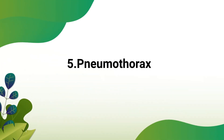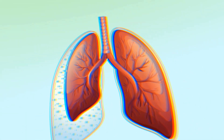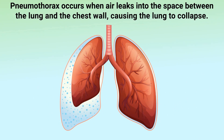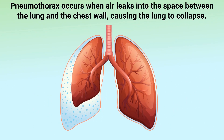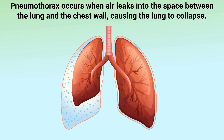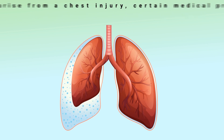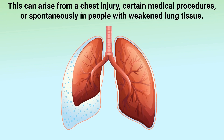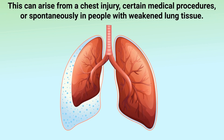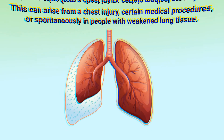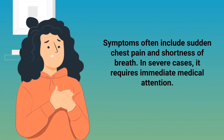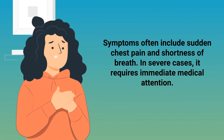Pneumothorax occurs when air leaks into the space between the lung and the chest wall, causing the lung to collapse. This can arise from a chest injury, certain medical procedures, or spontaneously in people with weakened lung tissue. Symptoms often include sudden chest pain and shortness of breath. In severe cases, it requires immediate medical attention.